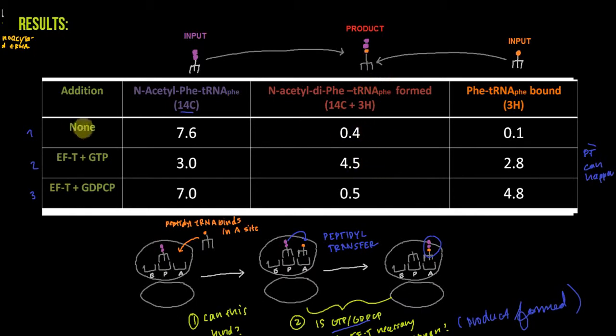We see an increase in our product from when we added nothing to now when we add EF-T and GTP, and this is corroborated by a drop in N-acetyl-Phe-tRNA-Phe. This drop is because the reactant is being turned into a product, not because there's less N-acetyl-Phe-tRNA-Phe binding. We know that because we see an increase in our product, and that increase has to come from somewhere—it's coming from using up the N-acetyl-Phe-tRNA-Phe and the fact that Phe-tRNA-Phe can actually bind.